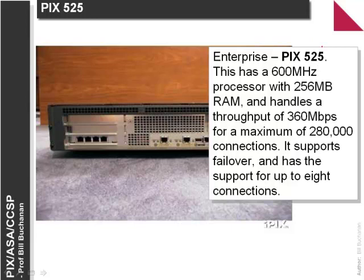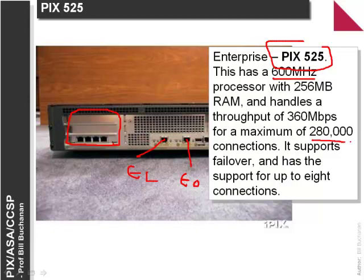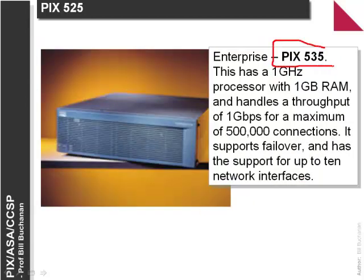The level above is the PIX 525, which has again a faster processor and more scope for extra connections apart from the two default Ethernet 0 and Ethernet 1. It can support up to 280,000 connections at a time. The PIX tries to remember all the connections and the state they are in, so each connection takes up some amount of memory. For much more robust systems we have the PIX 535, a 1GHz processor with 1GB of RAM, supporting up to half a million connections with 10 network interfaces.